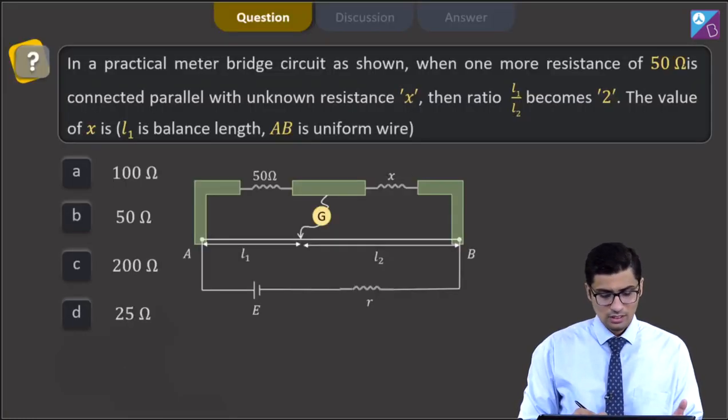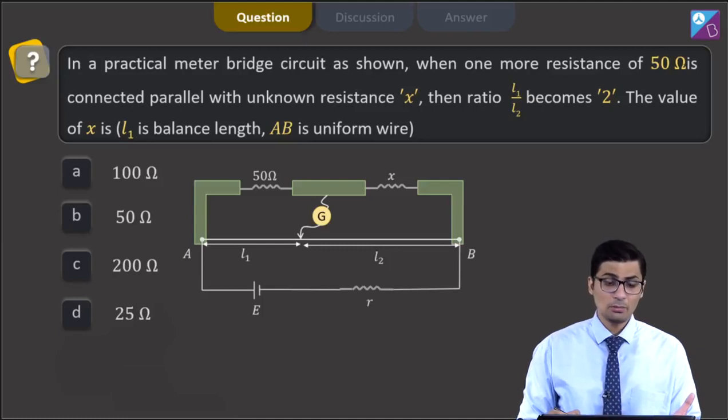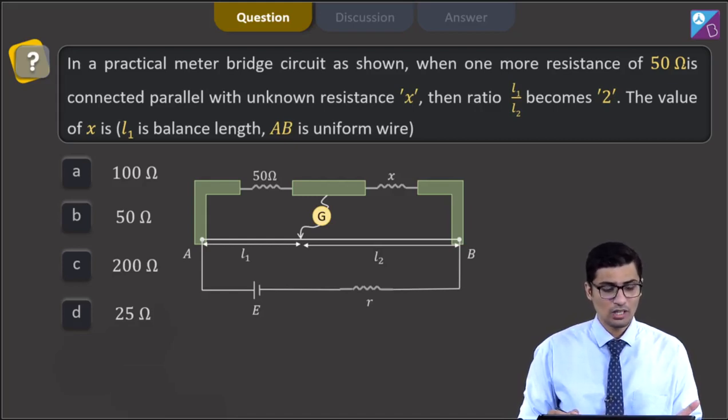This is question 12. The question says in a practical meter bridge circuit as shown, when one more resistance of 50 ohms is connected parallel with unknown resistance X, then the ratio L1 by L2 becomes 2. The value of X is (L1 is the balance length and AB is the uniform wire).